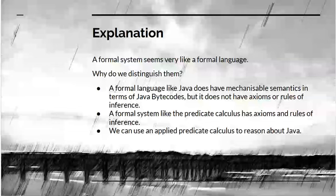It might seem that formal systems and formal languages are the same thing. They're not. How do we distinguish them? Let's take one which most people will be familiar with, a formal language like Java. It does have a syntax, and it has a mechanisable semantics given in terms of Java bytecode. But it doesn't have axioms or rules of inference. So Java is a formal language, but Java is not a formal system. On the other hand, predicate calculus is a formal system. It has axioms and rules of inference. And we can use predicate calculus to reason about Java. In that sense, predicate calculus would be operating at a meta level.